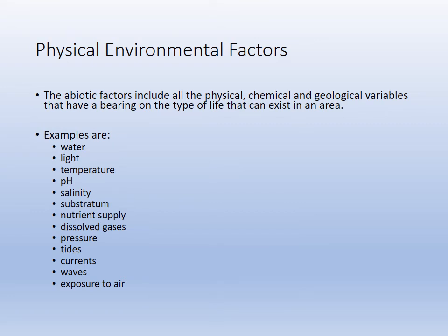The abiotic factors that are important include: water, light levels, temperature, pH, salinity, substratum or substrate (sandy, rocky, muddy), nutrients, dissolved gases, pressure, tides, waves, and intertidal exposure to air. When studying an ecosystem, you need to know all of them — they affect the distribution of life.